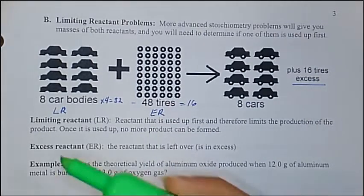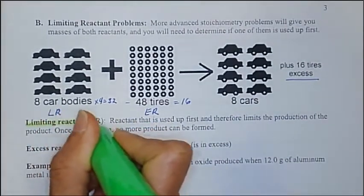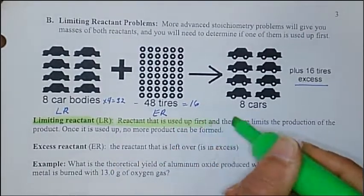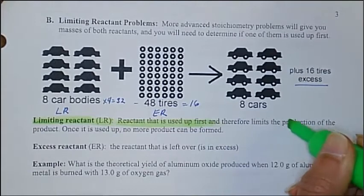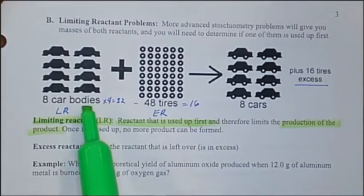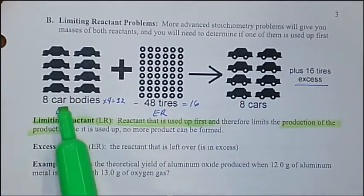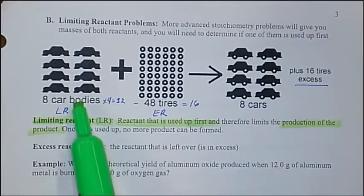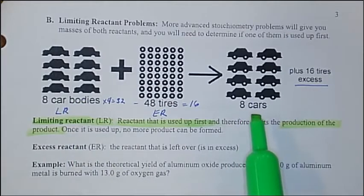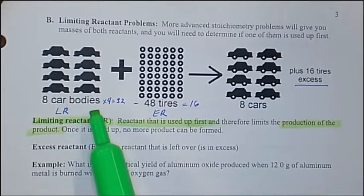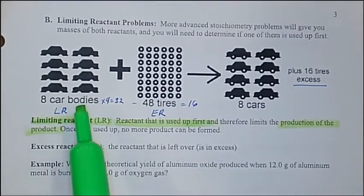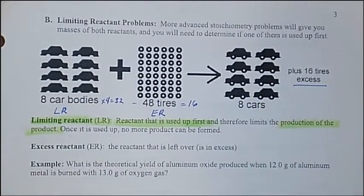A limiting reactant — we call it LR — is the reactant that is used up first, and it also limits the production of the product. Just like this: the 8 car bodies are used up first, and it also limits the production. You only have 8 car bodies, therefore you can only make 8 cars. If you had more than 8 car bodies, then you could use more tires. But since you don't, this is the one that limits the production of our reaction.